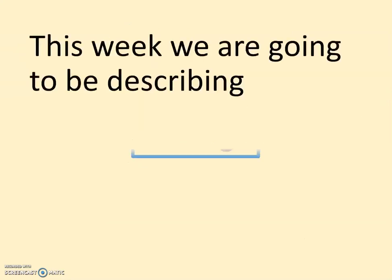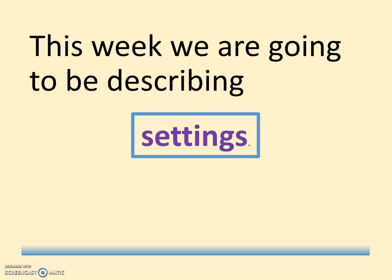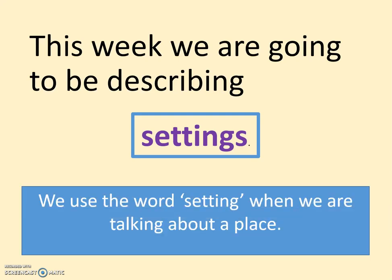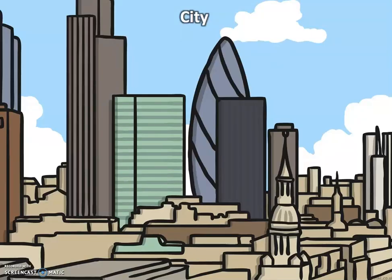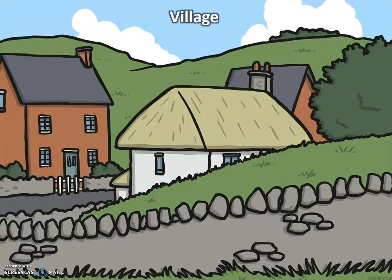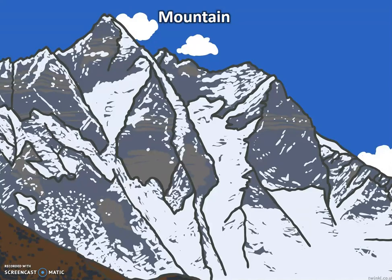This week we're going to be describing settings. We use the word setting when we are talking about a place. There are lots of settings in our storybooks. For example, a forest — we might describe the setting, a forest, saying the trees are tall or the grass is green. A city, a village, a beach, or our setting might be in the mountains.